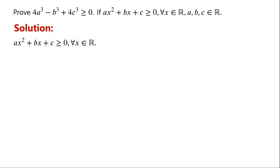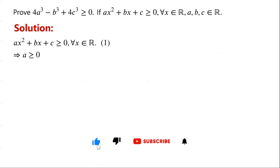From inequality 1, we know that a must be greater than or equal to zero. Because if a is less than zero, then as x tends towards infinity, the quadratic expression tends to negative infinity. So there must exist some large values of x for which the quadratic expression is negative. This contradicts that the quadratic expression is always non-negative for all real x. So a must be greater than or equal to zero.